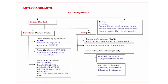Anticoagulants are the drugs that prevent the coagulation of blood. Anticoagulants are classified into two types: in vivo anticoagulants and in vitro anticoagulants. First let us discuss in vivo anticoagulants.